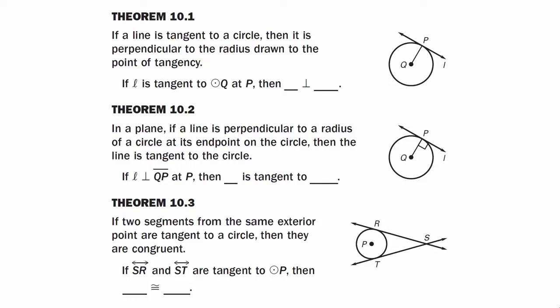Theorem 10.1: if a line is tangent to a circle, then it is perpendicular to the radius drawn to the point of tangency. If line L is tangent to circle Q at P, then line L is perpendicular to line segment QP. Remember, perpendicular means it creates 90-degree angles, so we have two 90-degree angles here because they are perpendicular.